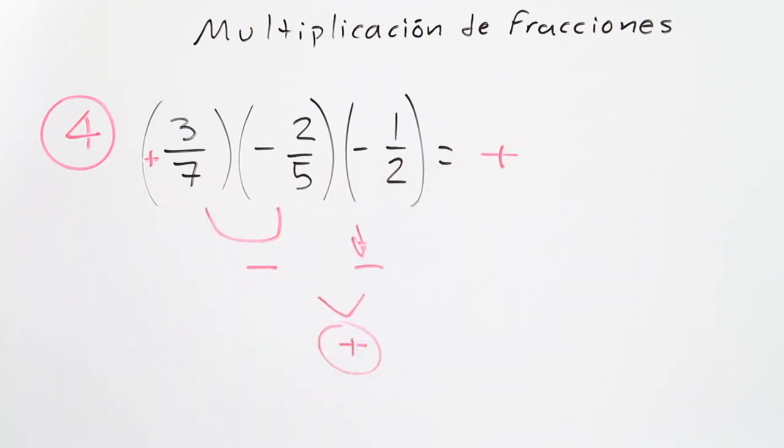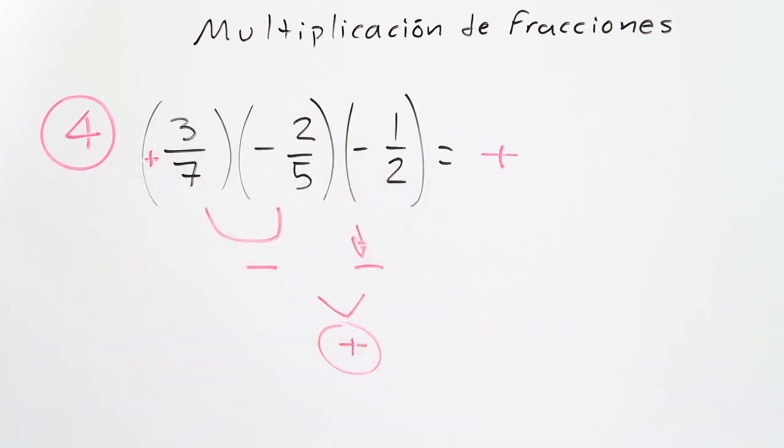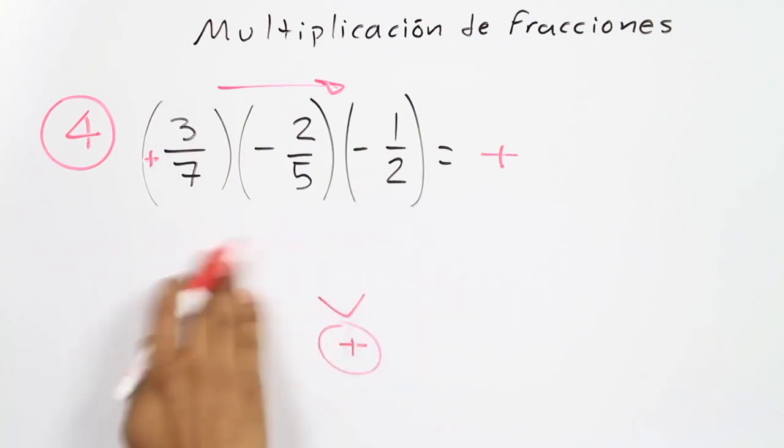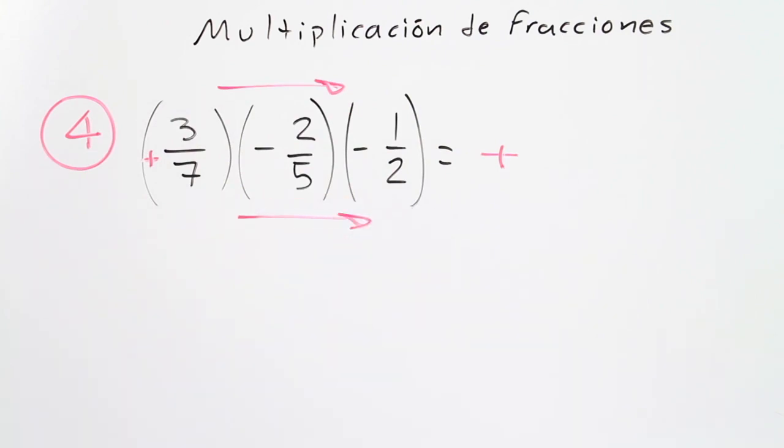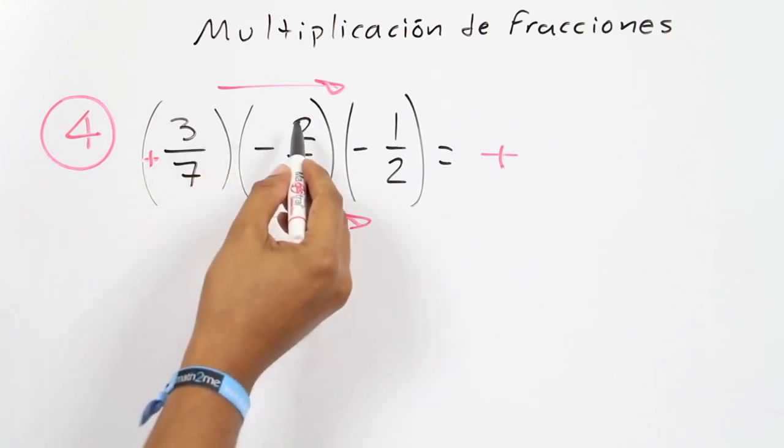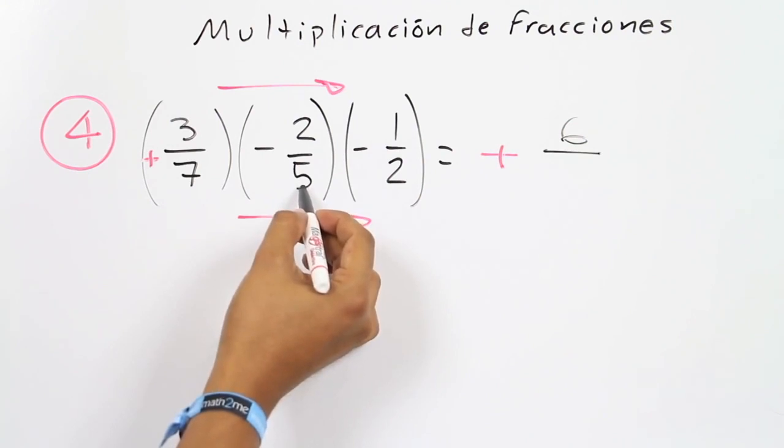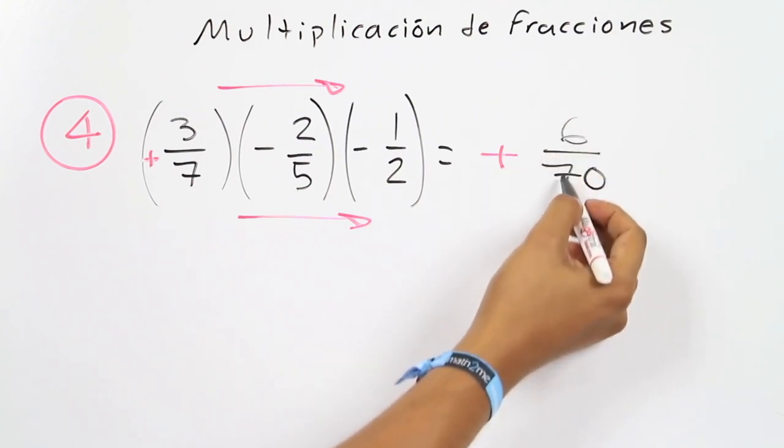Working now with fractions, it doesn't matter how many fractions there are, the procedure is the same: multiplying all the numerators over the multiplication of all the denominators. 3 times 2 equals 6, then 6 times 1 equals 6 over 7 times 5 equals 35, then 35 times 2 equals 70. This is the answer.